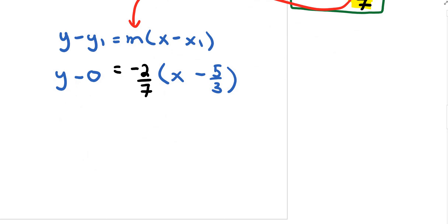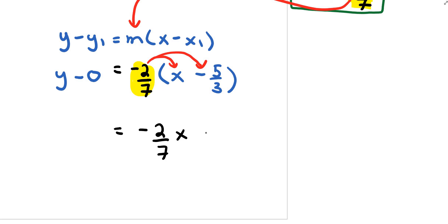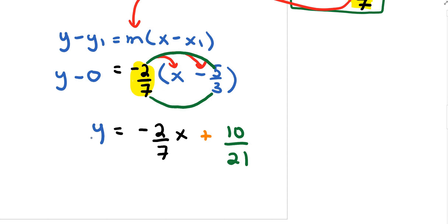In calculus 12 we could take this as a final answer, but for grade 10 math we'll distribute. Distributing gives negative 2 over 7x, and then 2 times 5 is 10, and 7 times 3 is 21, so plus 10 over 21, with y on the left.